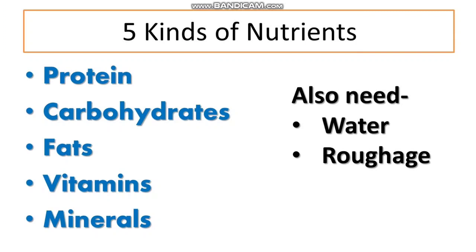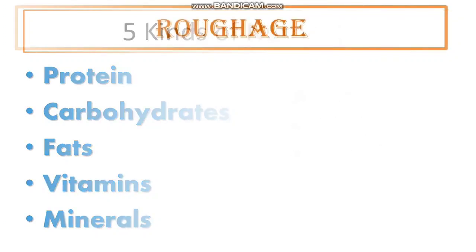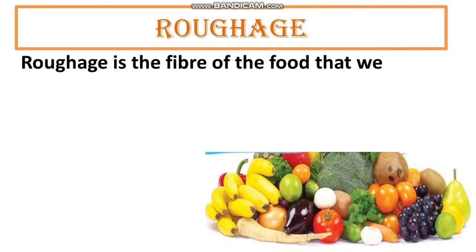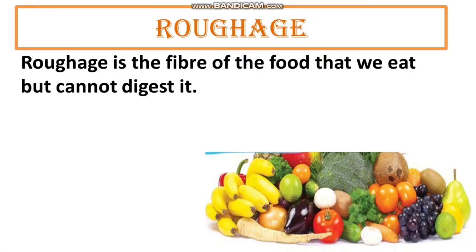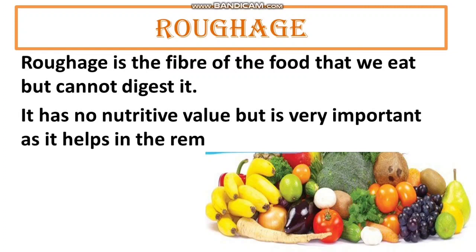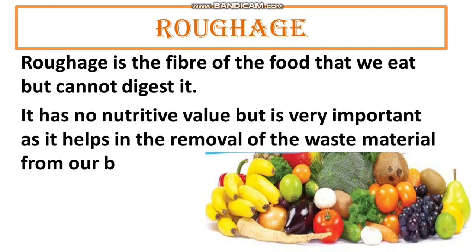Since we have discussed the five kinds of nutrients, we will be talking about roughage and water in this video. Water and roughage must be included in our daily diet for the proper functioning of our body. Roughage is the fiber of the food that we eat, but our body cannot digest it. It has no nutritive value, but it is very important as it helps in the removal of waste material — that is undigested food — from our body.